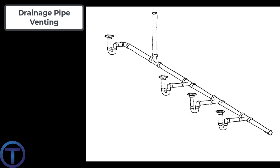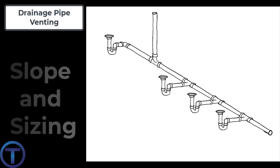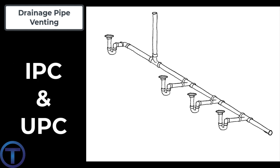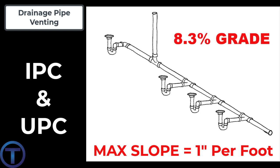Let's examine some code requirements for circuit vents regarding the slope and sizing of the pipe. Both the International and Uniform Plumbing Codes state that the slope for a circuit vent shall be no more than one inch per foot, or 8.3% grade. Let me point out — that is pretty steep slope. We're usually at quarter inch per foot or less. But in this case, a circuit vent can actually have a steeper slope.